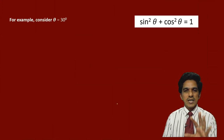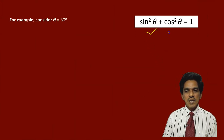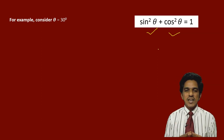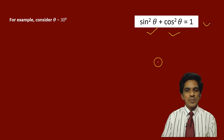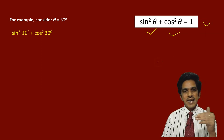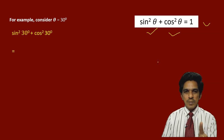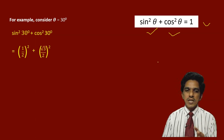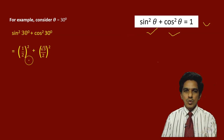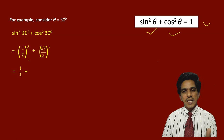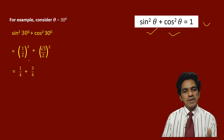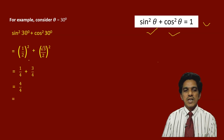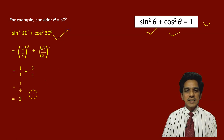Let us verify this identity with theta = 30 degrees. We find sin²30° + cos²30°. Sin 30° = 1/2, so the first term is (1/2)² = 1/4. Cos 30° = √3/2, so the second term is (√3/2)² = 3/4. Adding: 1/4 + 3/4 = 4/4 = 1. So the identity is verified for 30 degrees.